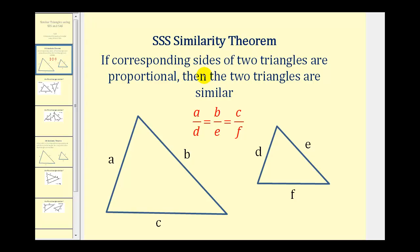If corresponding sides of two triangles are proportional, then the two triangles are similar. So looking at these two triangles, if the ratio of A to D is equal to the ratio of B to E, which is equal to the ratio of C to F, then we have two similar triangles.